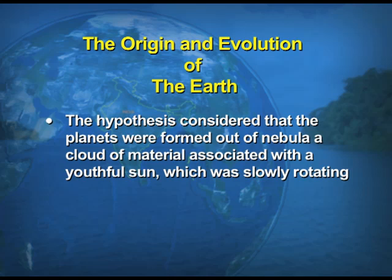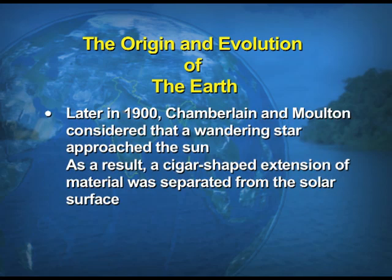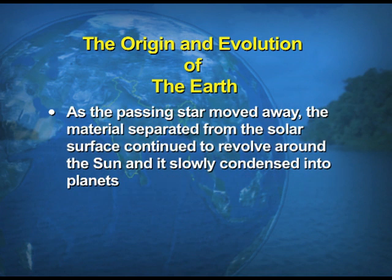This hypothesis considers that the planets were formed out of a nebula — a cloud of materials associated with a youthful sun, which was slowly rotating. Later on, Chamberlain and Malton also considered that a wandering star approached the sun, and as a result, a cigar-shaped extension of material was separated from the surface. As the passing star moved away, the material separated from the solar surface continued to revolve around the sun and slowly condensed into planets.